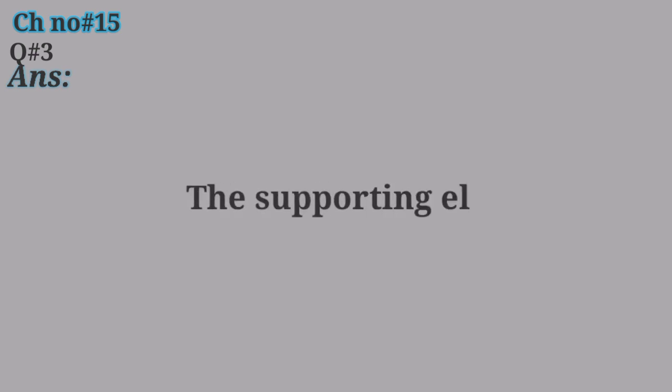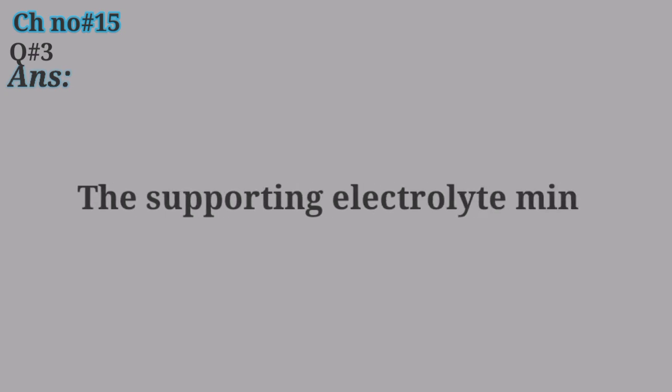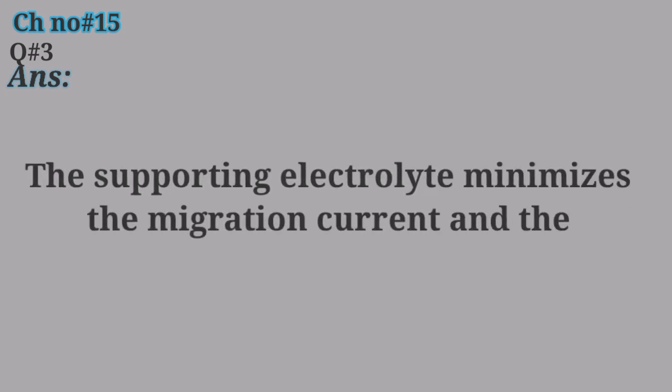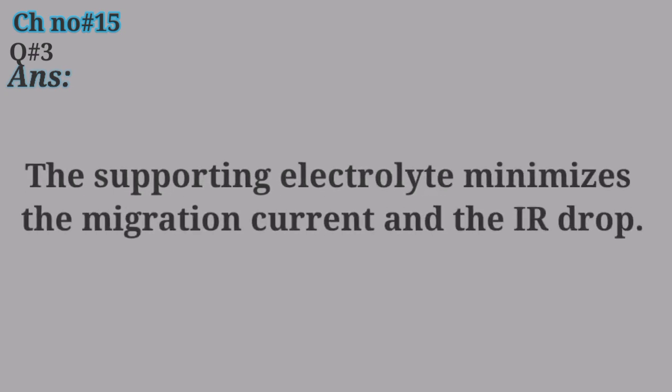Question No. 3: Give two reasons for using a supporting electrolyte in voltammetry. The supporting electrolyte minimizes the migration current and minimizes the IR Drop.